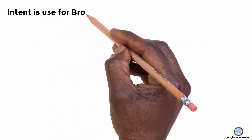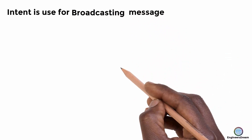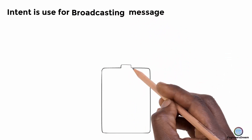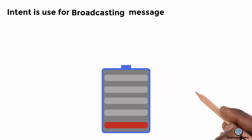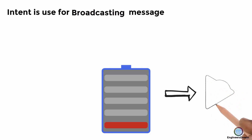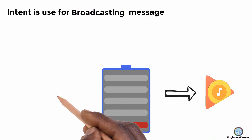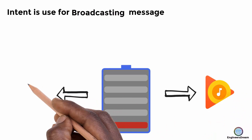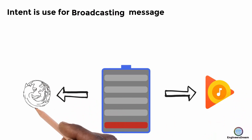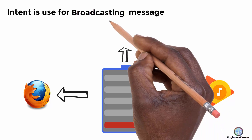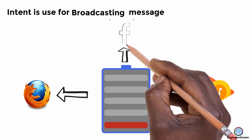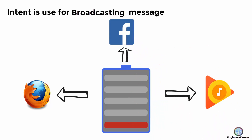Intents are also used for broadcasting a message. For example, if your phone has a low battery, your Android operating system will pass a message to all applications saying that the battery is low. The other applications will receive this message via the Broadcast Receiver, and this communication between the OS and the application is carried out by intents.